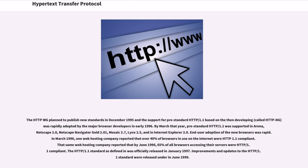The HTTP WG planned to publish new standards in December 1995, and support for pre-standard HTTP 1.1 based on the then-developing HTTP-NG was rapidly adopted by the major browser developers in early 1996. By March that year, pre-standard HTTP 1.1 was supported in Arena, Netscape 2.0, Netscape Navigator Gold 2.01, Mosaic 2.7, Lynx 2.5, and Internet Explorer 2.0. By March 1996, one web hosting company reported that over 40% of browsers in use were HTTP 1.1 compliant, and by June 1996, 65% of all browsers were HTTP 1.1 compliant. The HTTP 1.1 standard was officially released in January 1997.